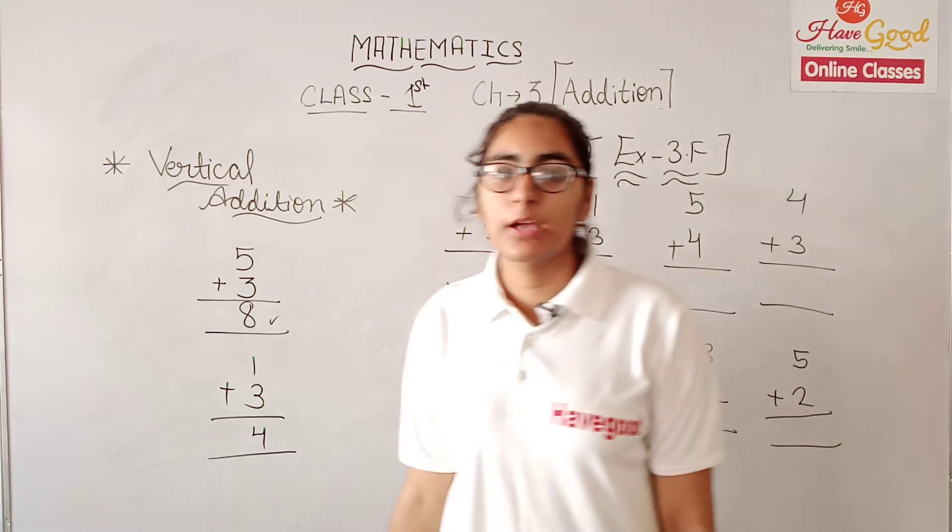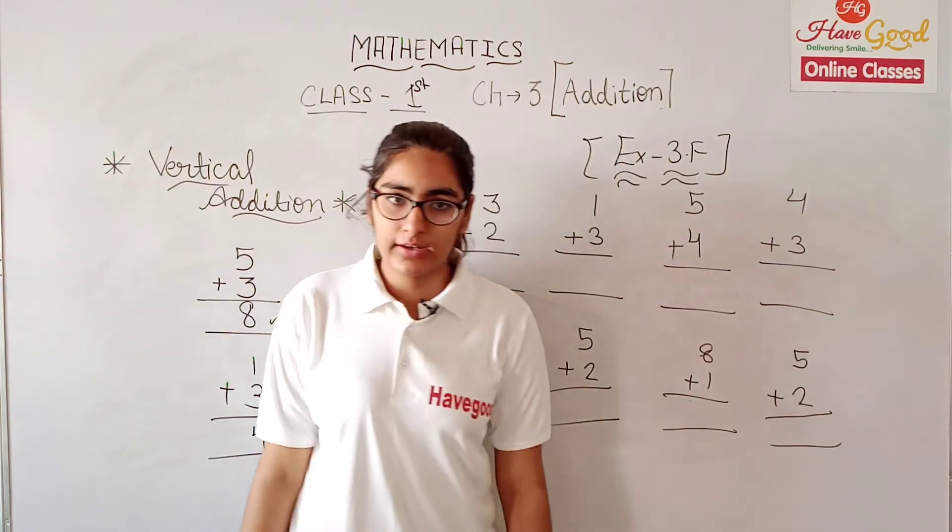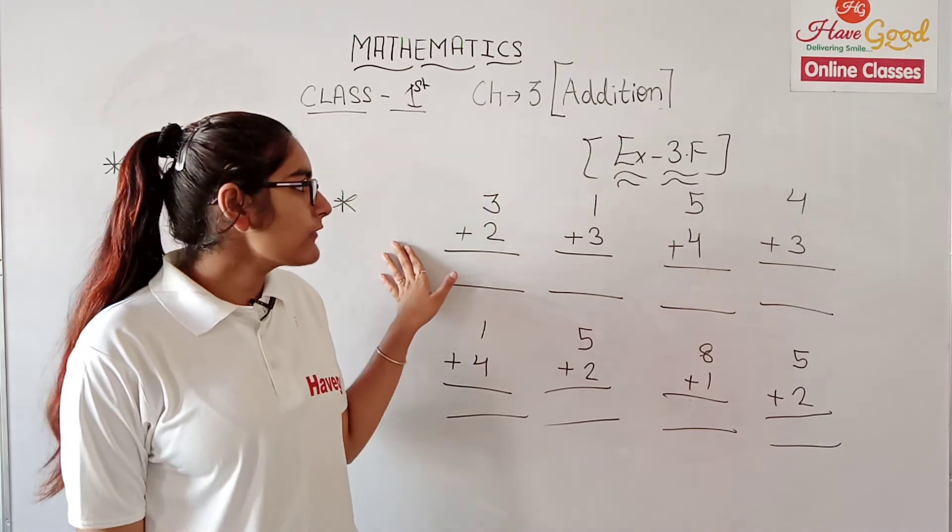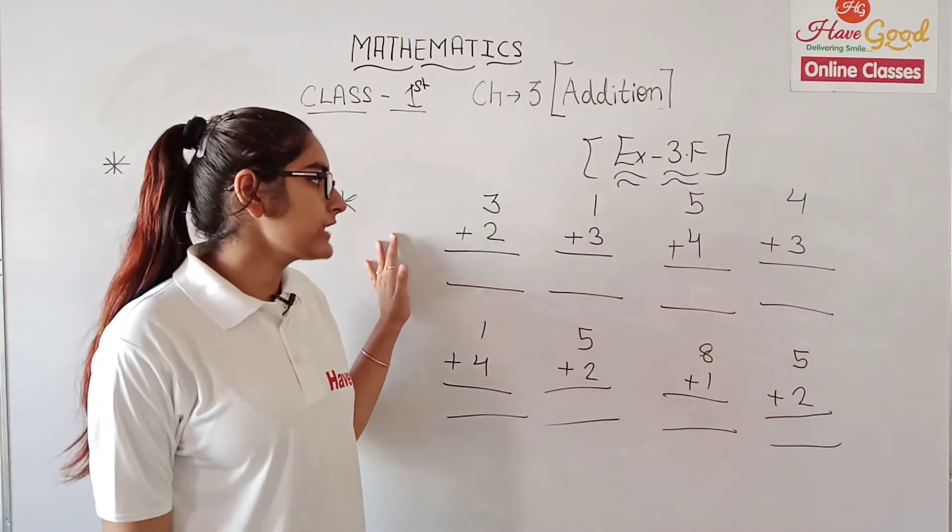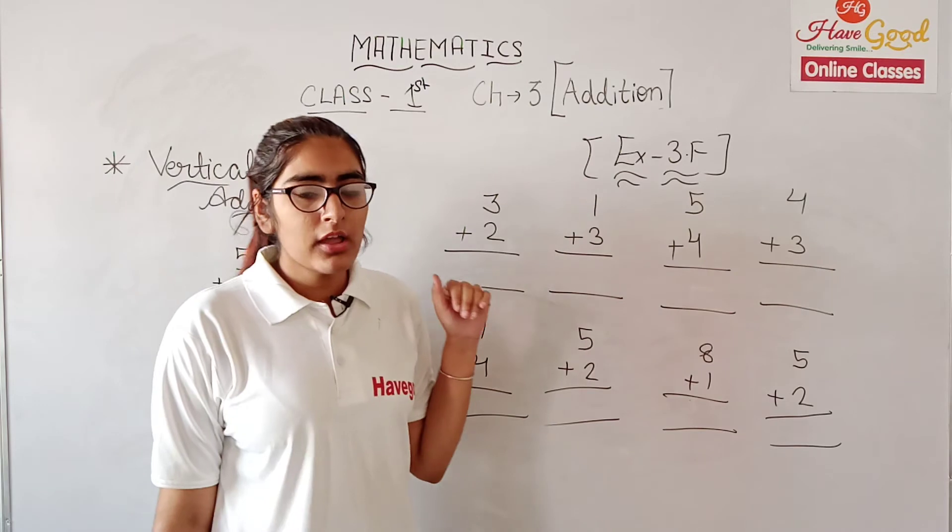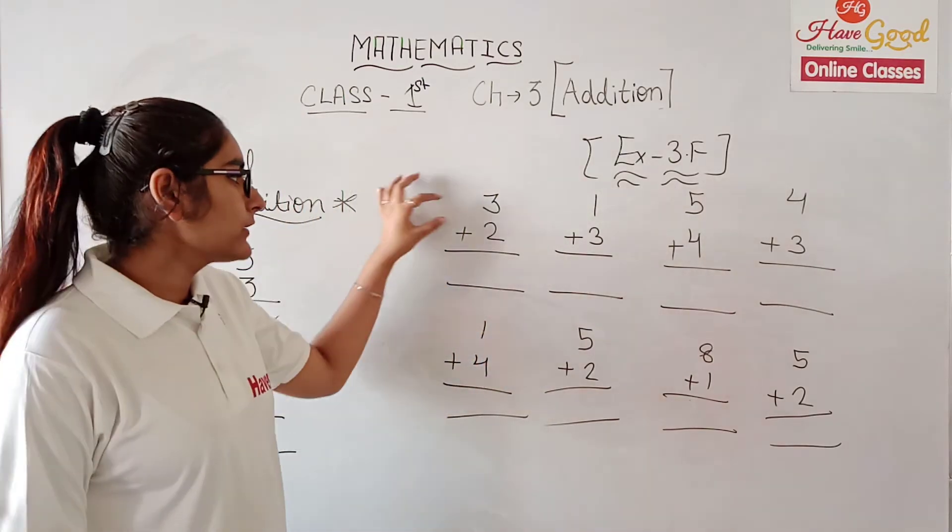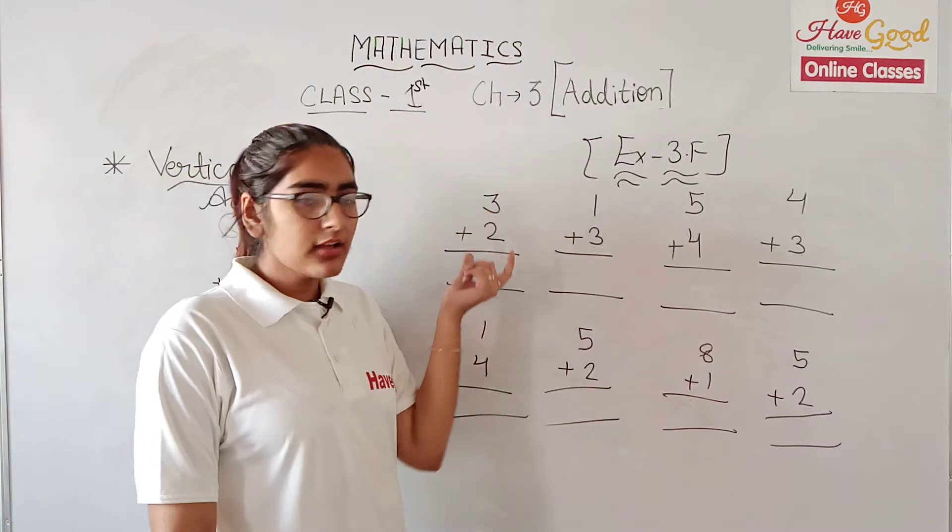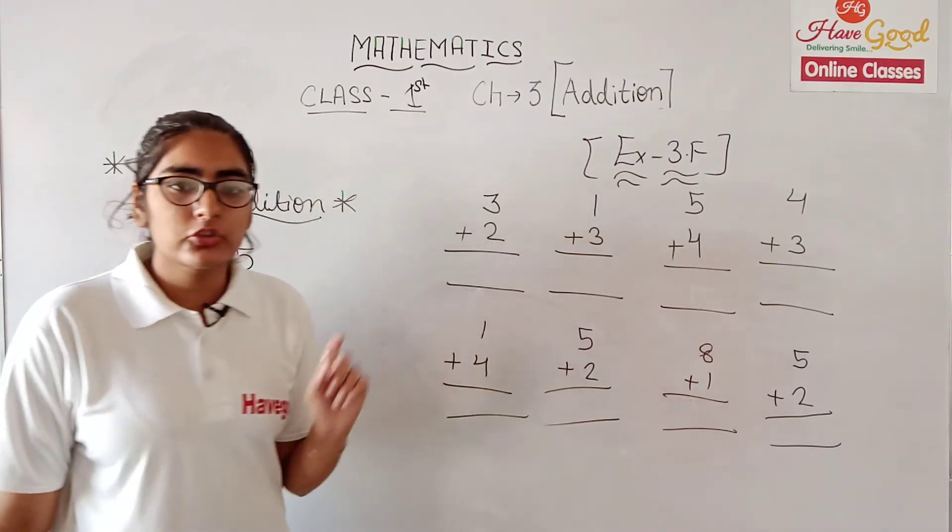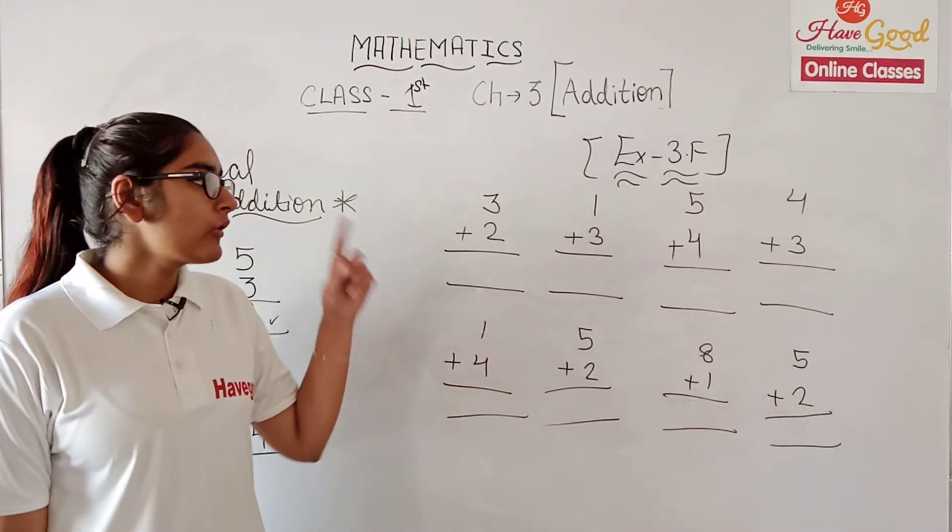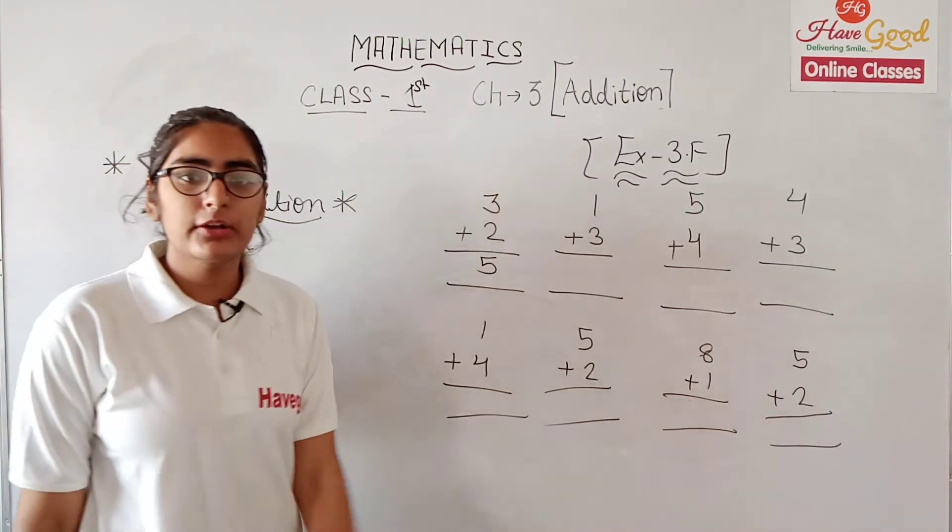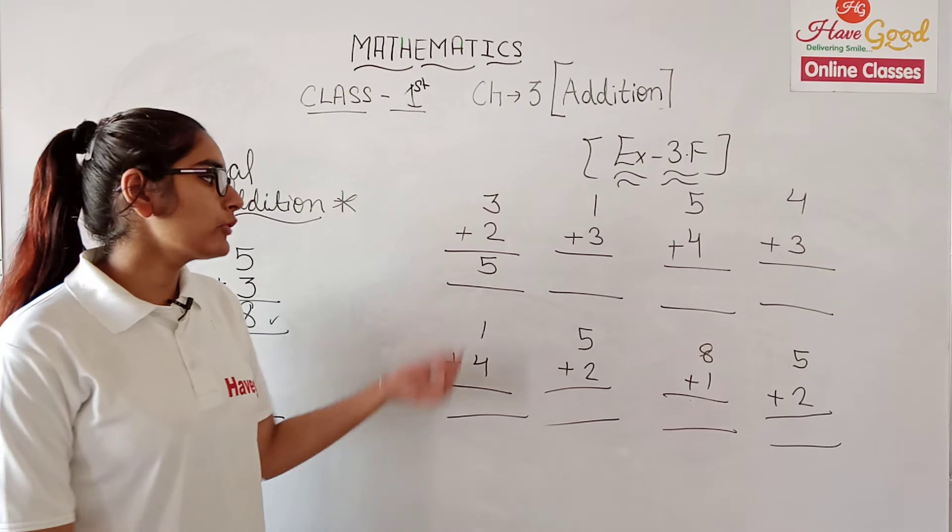Next, we have the exercise 3F. So we have to solve these problems. First, 3 plus 2. So first we have 3, forward counting 2: then 3, 4, 5. So our answer is 5.